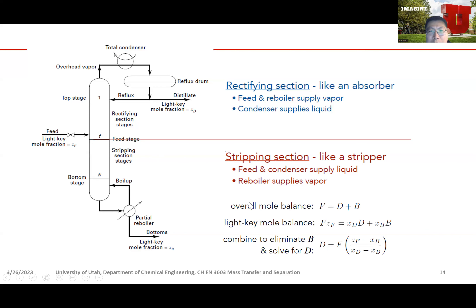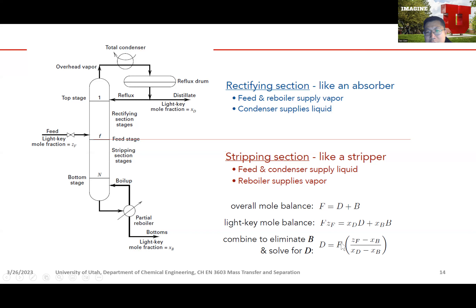For the overall mole balance of the whole distillation column, the feed flow rate equals the distillate plus the bottom: F = D + B. We can also write a light key mole balance: F·Zf = D·xd + B·xb. We can combine these to eliminate B and solve for D. From this, since feed and compositions are known, we can compute the distillate flow rate and the bottom flow rate.